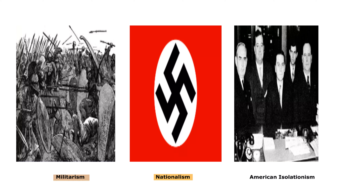Germany's demilitarization of the Rhineland in violation of the Treaty of Versailles and the Locarno Treaties further escalated tensions and marked a significant step in Hitler's aggressive expansion. Nationalistic sentiments and territorial disputes in various regions contributed to regional tensions and conflicts. These issues were particularly evident in Europe, where unresolved territorial claims from World War I remained contentious. American isolationism also played a significant role in the early stages of World War II, as the U.S. adopted a stance of neutrality and non-intervention in the growing global conflicts.